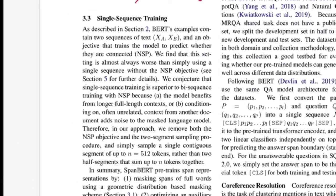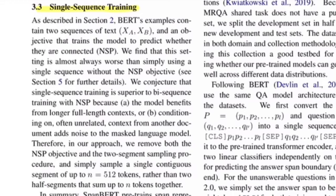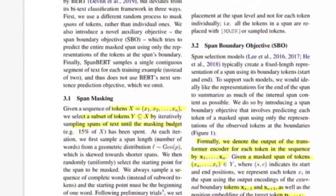For single sequence training, authors found the next sentence prediction loss was not helping their accuracy, so they simply sample a single contiguous span of 512 tokens rather than two half-segments. Since BERT's maximum length is 512 tokens and NSP is dropped, the full input can now be one 512-token sequence, rather than two shorter sentences summing to 512 as in the original BERT paper.